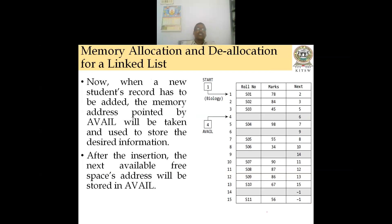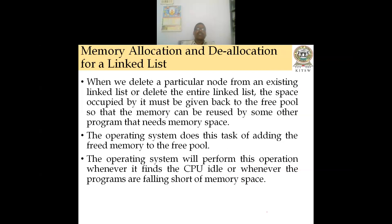When a new student's record has to be added, the memory address pointed to by avail is used to store the desired information. After the insertion, the next available free space address is stored in avail. When we delete a node or the entire linked list, the memory must be returned to the free space pool so it can be reused by other programs. The operating system performs this task whenever the CPU is idle or programs are running short of memory.